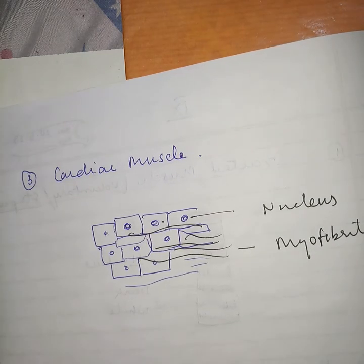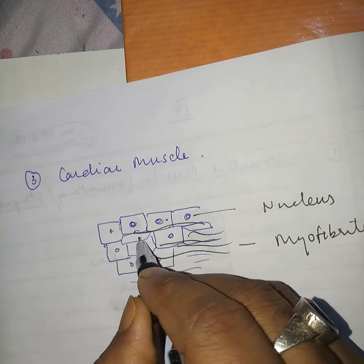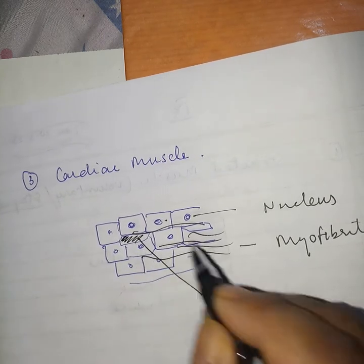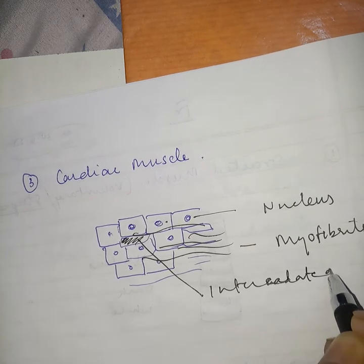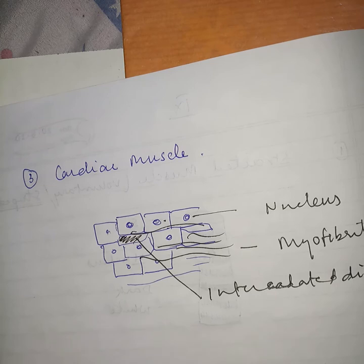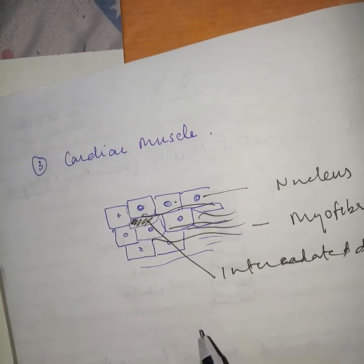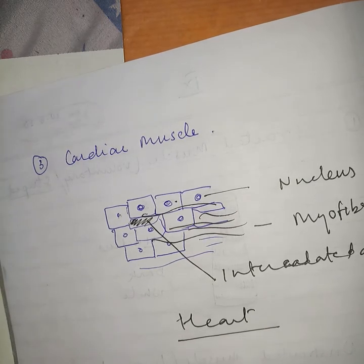Cardiac muscles have fibers known as myofibrils. The fibrous structures in cardiac muscle are called myofibrils, and they have intercalated discs. This muscle is especially found in the human heart — the human heart contains only cardiac muscles.